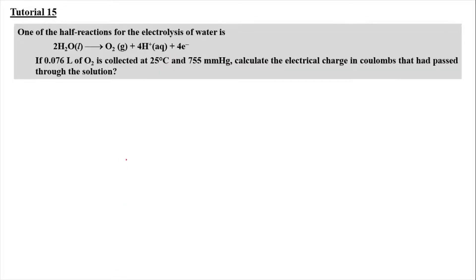Now we're going to move on to the next question, which is tutorial 15. One of the half reactions for the electrolysis of water is written as 2 H₂O liquid produces oxygen gas plus 4 H⁺ aqueous and 4 electrons. If 0.076 liter of oxygen is collected at 25 degree Celsius and 755 millimeter mercury, calculate the electric charge. We have to find Q in Coulomb that had passed through the solution. So first we need to find the number of mol. The number of mol can be gotten from the ideal gas equation, which is PV is equal to nRT. So we need to find n. We can rearrange the equation to be PV equal to RT.